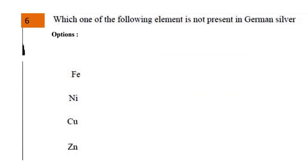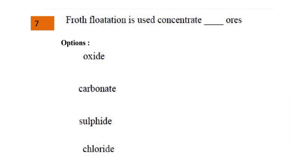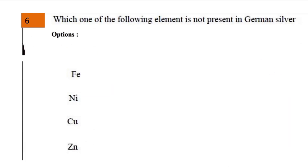Next question: which one of the following elements is not present in German silver? The answer is ferrous (iron), because German silver is made up of nickel, copper, and zinc. Iron (ferrous) is not part of its composition.